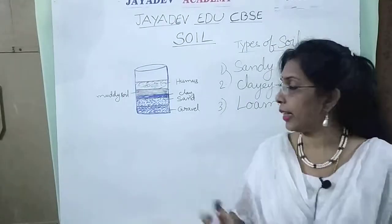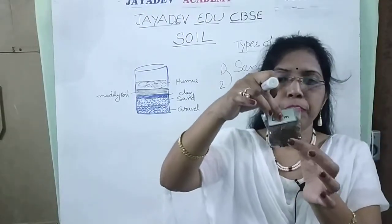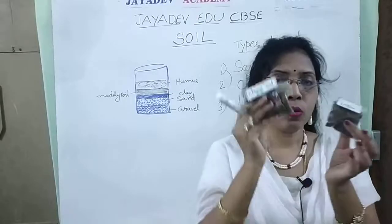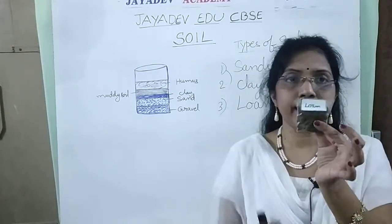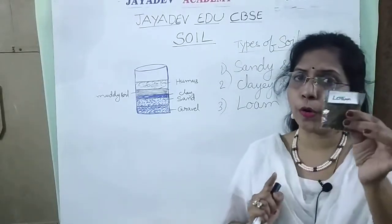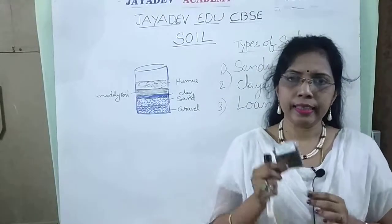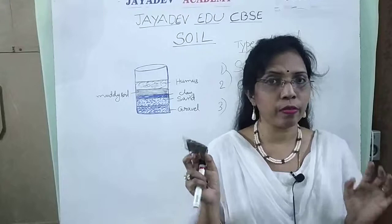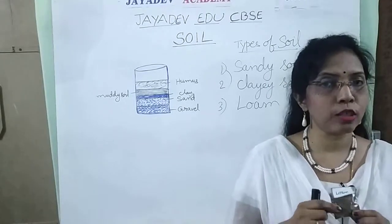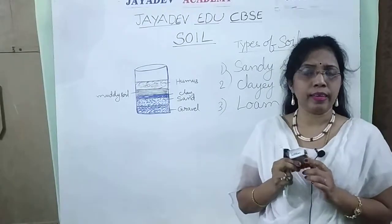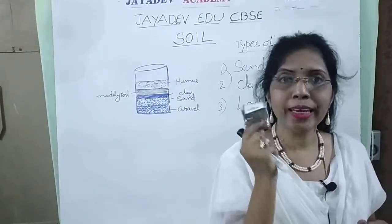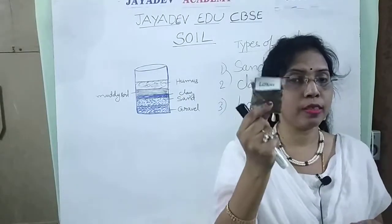The next one is loam. Loam is a mixture of both sand and clay. It contains equal amounts of sand and clay, and it is very good for growing crops. It contains a lot of water as well as a lot of air and humus in it, making it very good for plants to grow. Loam can hold enough water and air so that plants grow very well, as it is a mixture of both sand and clay.